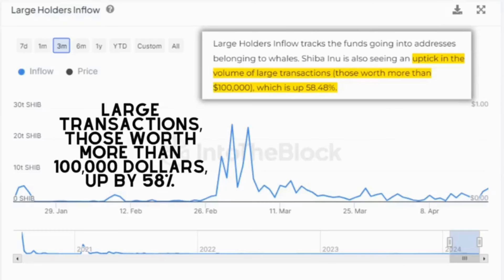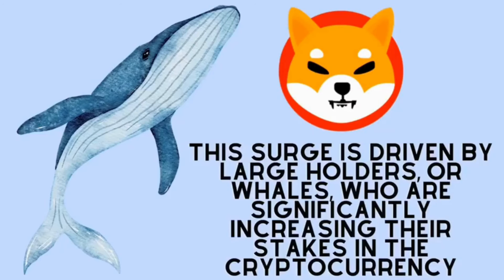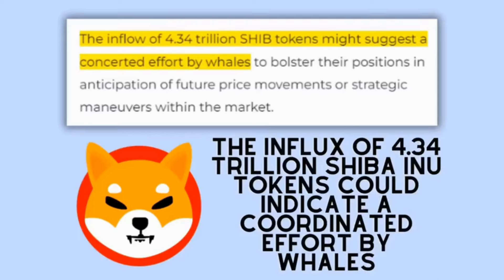This uptick in activity isn't just a blip on the radar. Shiba Inu is witnessing a rise in the volume of large transactions, those worth more than $100,000, up by 58%. This surge is driven by large holders, or whales, who are significantly increasing their stakes in the cryptocurrency. The influx of 4.34 trillion Shiba Inu tokens could indicate a coordinated effort by whales to strengthen their positions ahead of potential future price movements or strategic moves within the market.